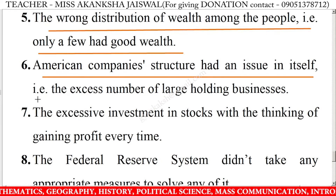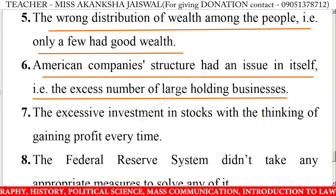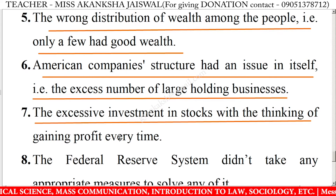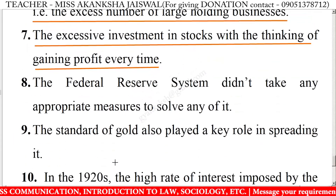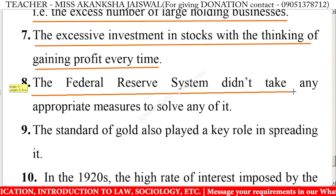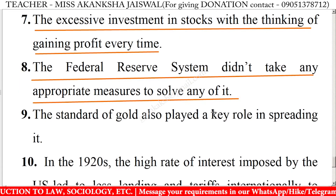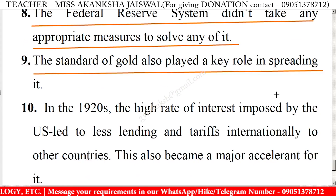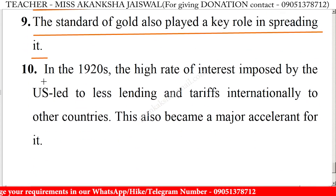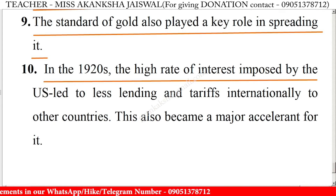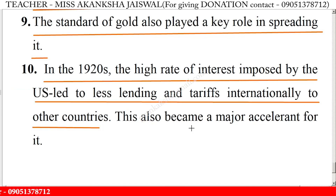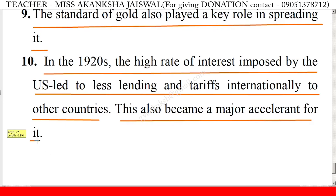The wrong distribution of wealth among the people — where only a few had good wealth — was another factor. American companies' structure had an issue in itself, namely the excess number of large holding businesses. The excessive investment in stocks with the thinking of gaining profit every time, combined with the Federal Reserve System not taking appropriate measures, worsened the situation. The gold standard also played a key role in spreading it, and in the 1920s, high interest rates imposed by the U.S. led to less international lending and tariffs to other countries, becoming a major accelerant.